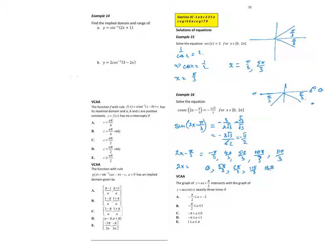Dividing everything by 2, the final answers for x are: 0, 5π/6, π (which is 6/6), 11π/6, and 2π (which is 12π/6).